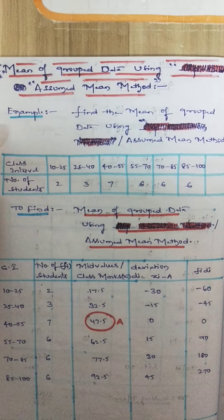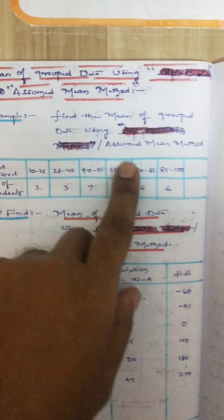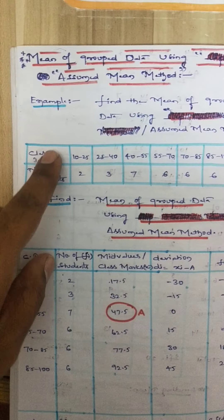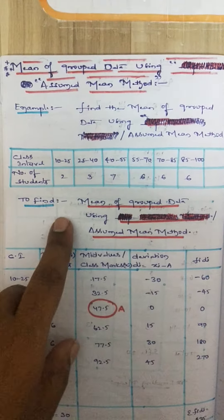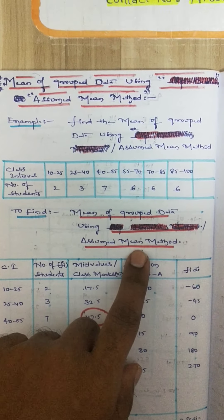So here I have taken one example. Find the mean of grouped data using assumed mean method. Here the class interval is given and number of students is given. We have to find the mean of grouped data using assumed mean method.